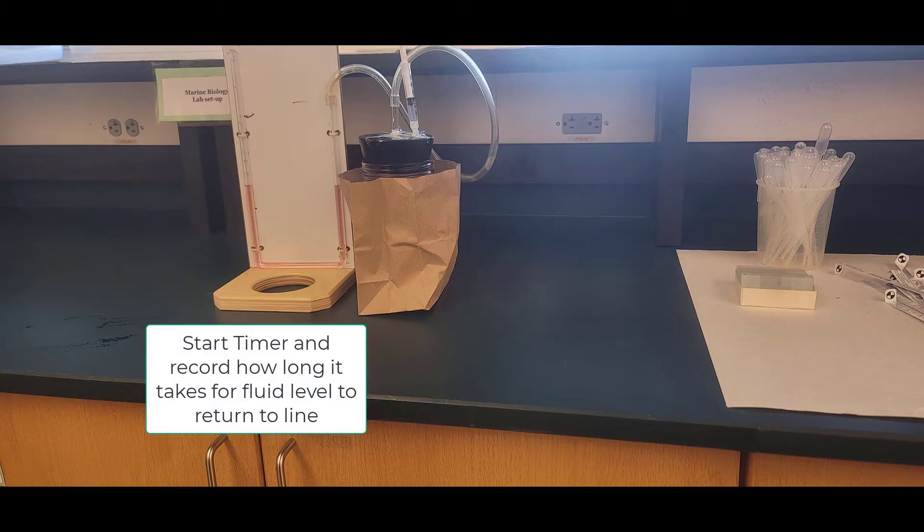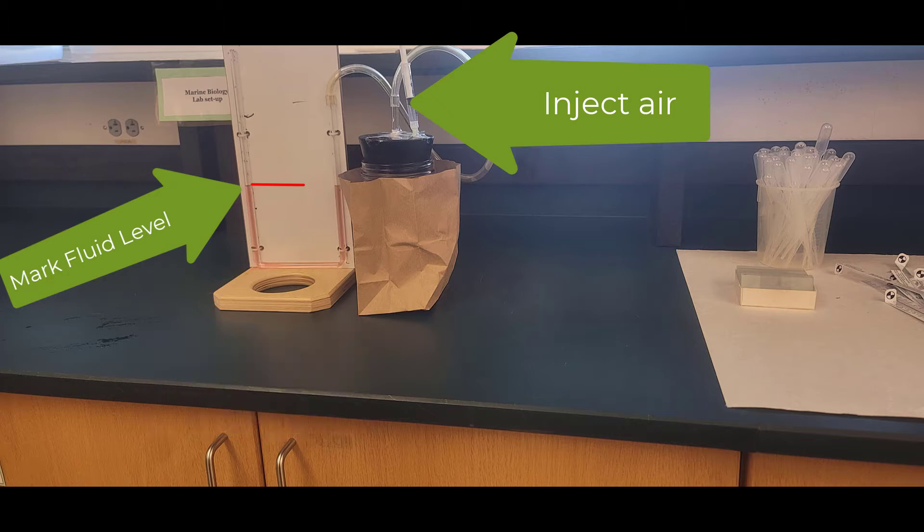We'll put two cc's of air in our syringe, and we're going to mark our fluid level once we inject the air. We start the timer once we have the fluid level injected.